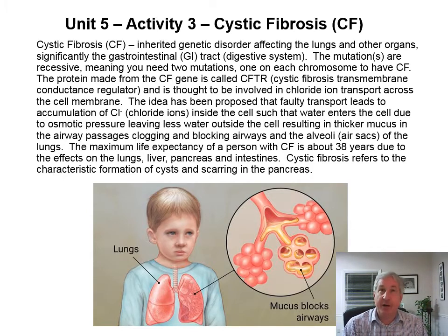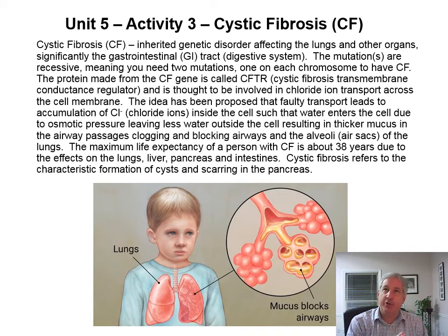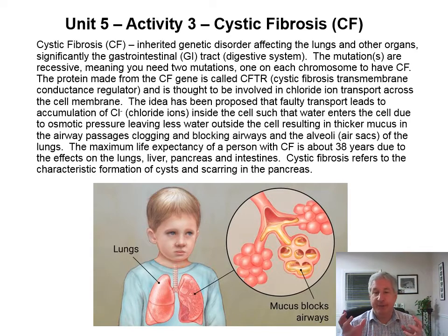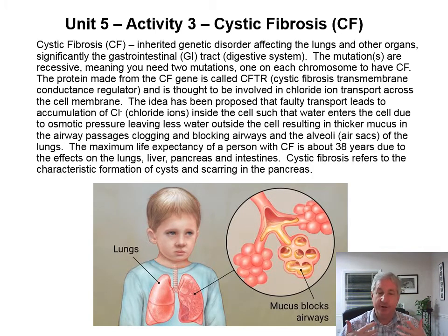Cystic fibrosis is a genetic disorder that tends to affect the lungs and other organs. It's named cystic fibrosis because you get cysts that form in the pancreas, and it significantly affects the GI tract as well. The mutations are recessive, so you have to have two mutations — one from each parent — to have cystic fibrosis. Fibrosis means formation of scar tissue, so the organ doesn't function anymore.